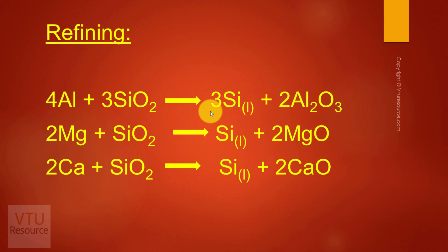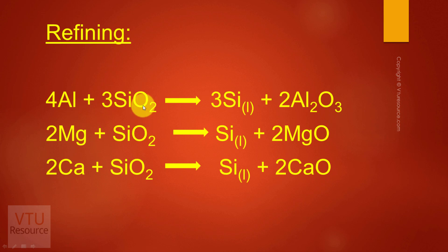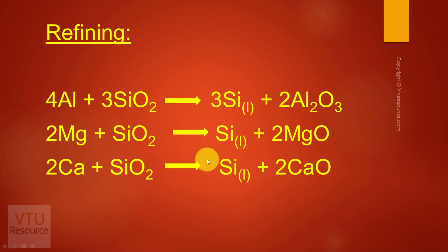The liquid silicon may contain aluminum, magnesium, or calcium. Aluminum is precipitated as alumina, magnesium is precipitated as magnesium oxide, and calcium is precipitated as calcium oxide. The silicon thus obtained is free from aluminum, magnesium, and calcium, and is called metallurgical grade silicon.